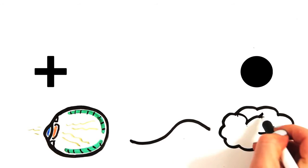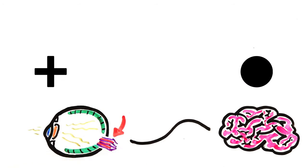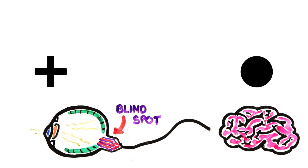The cells at the back of your eye transform light into signals that are sent to your brain, but they are missing right here because this is where nerves and blood vessels connect to the eye, so anything at that point in your vision you can't see, aka your blind spot.